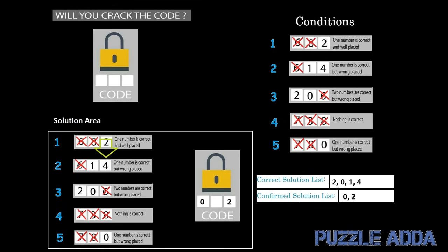Now taking condition 2 into consideration, which says one number is correct but wrongly placed. If we take number 1 as that number, it would contradict our code since only the middle position is left. So the number that can be in the middle position is 4, which fulfills condition 2 — digit 4 is correct but wrongly placed. So we fix digit 4 at position 2 of our code.